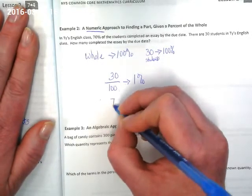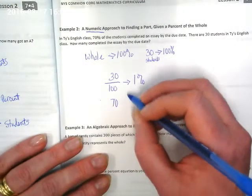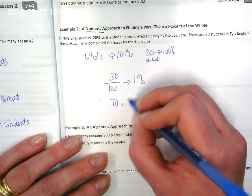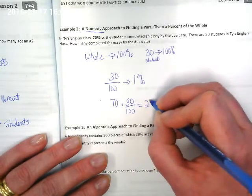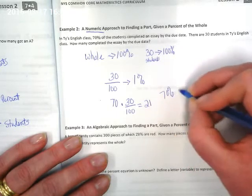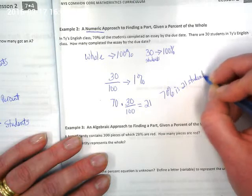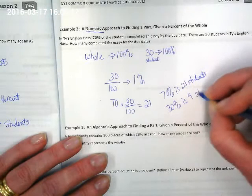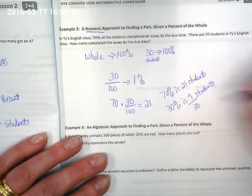We know that 70% of students are part of getting this done on time. We could multiply that by the 30 over 100 and we would get 21. So 70% is 21 students. That must mean that 30% is 9 students because we know we have 30 total students.